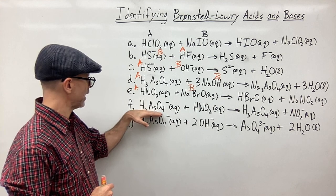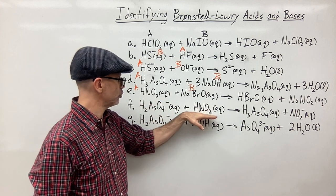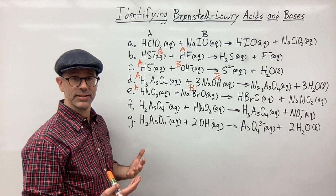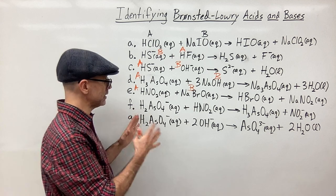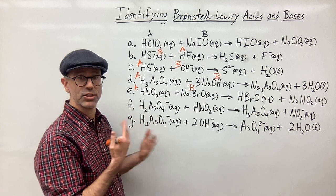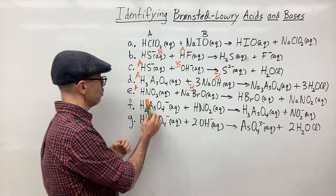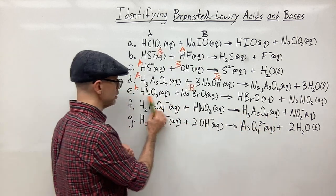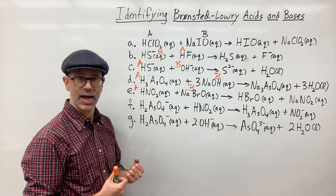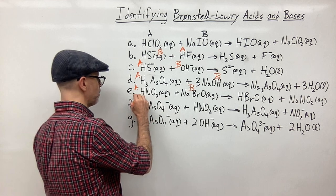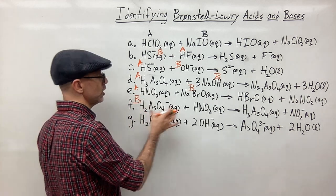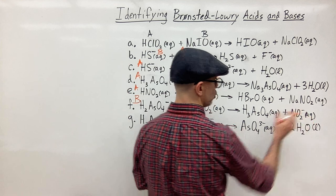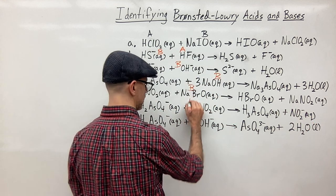Next we have H₂AsO₄⁻ and HNO₂. They both begin with hydrogen, so you might assume they're both acids — and technically they are — but in this reaction one must be the acid and one must be the base. H₂AsO₄⁻ goes to H₃AsO₄, so it picked up a hydrogen and is acting as the base. HNO₂ becomes NO₂⁻, so it donated the hydrogen and is acting as the acid.